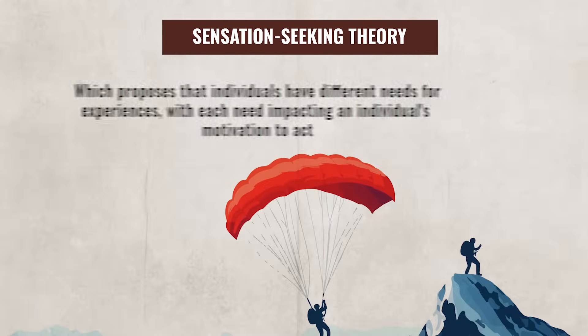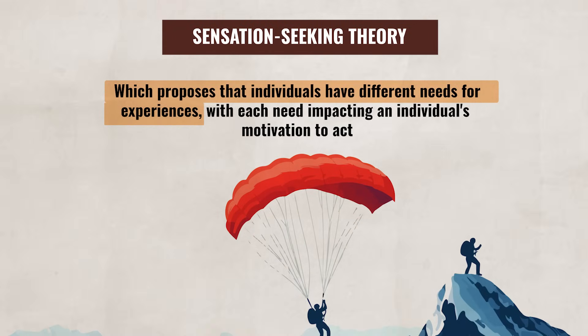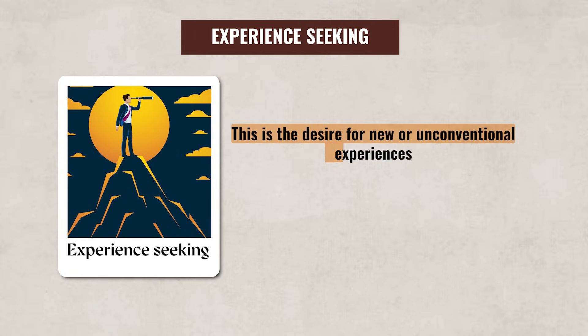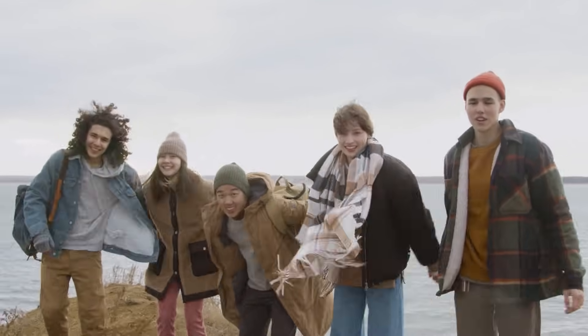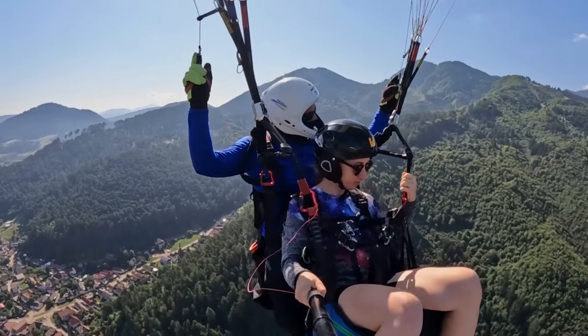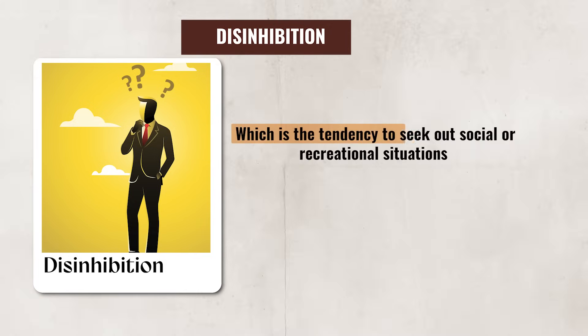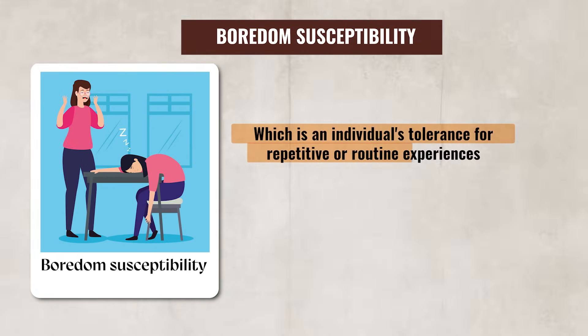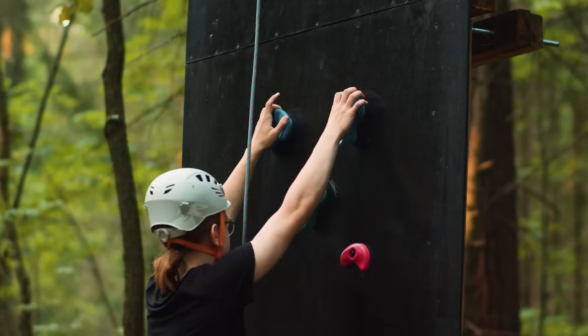The sensation seeking theory proposes that individuals have different needs for experiences, with each need impacting their motivation to act. This theory is broken up into four types. First, experience seeking: the desire for new or unconventional experiences, like exploring new places or meeting different people. Second, thrill or adventure seeking: the drive to engage in physically risky activities such as skydiving or extreme sports. Third, disinhibition: the tendency to seek out social or recreational situations that involve relaxing and having fun, such as going to parties. Fourth, boredom susceptibility: an individual's tolerance for repetitive or routine experiences, which influences how much they will seek new stimulation to avoid feeling bored.